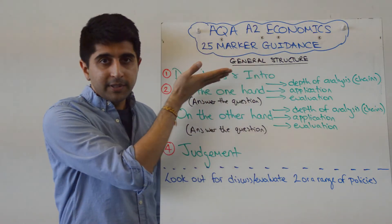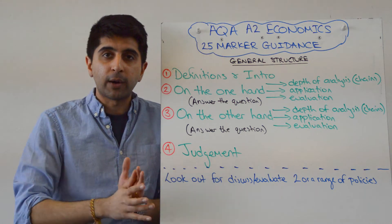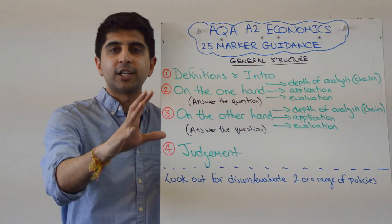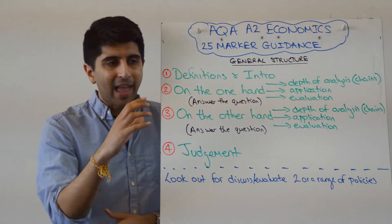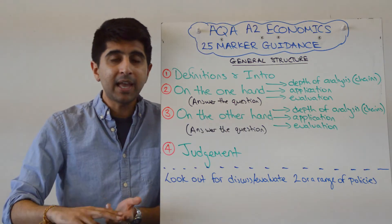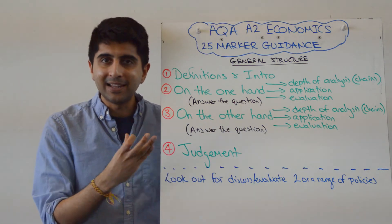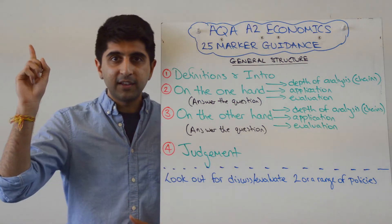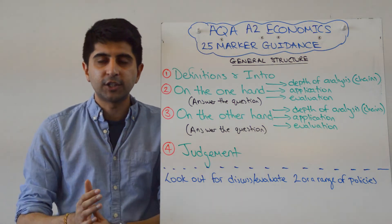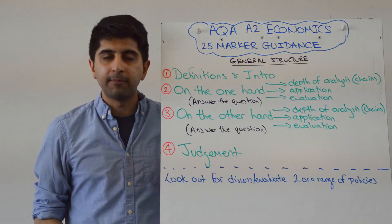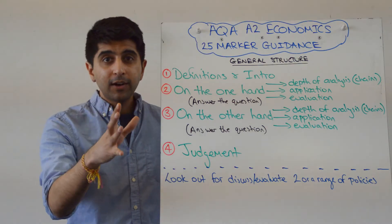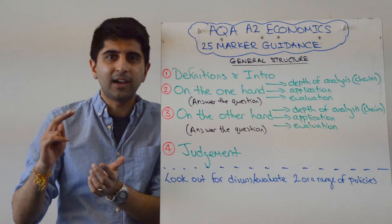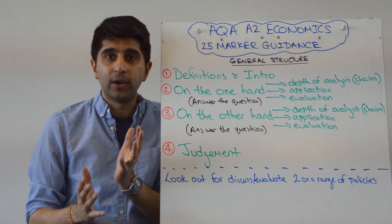You've done your intro with definitions, you've done your two-sided argument nicely, evaluating throughout, applying throughout, chains of analysis throughout, and diagrams where relevant. The last thing you then need to do is to make a judgement. Judgement is really important — it's going to separate the average economist from the best. The difference between your A and B and your A star for sure lies in your judgement. I made a separate video on how to write a good judgement. I'd recommend leaving at least five minutes to do that judgement. A good judgement is going to be at least half a page to three quarters of a page long — that's what we're looking for in a seriously good one.